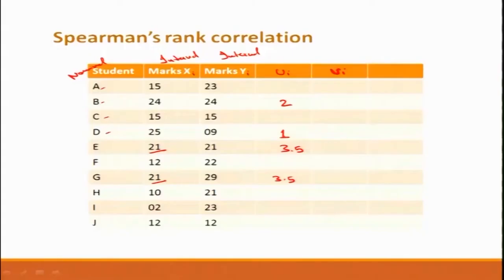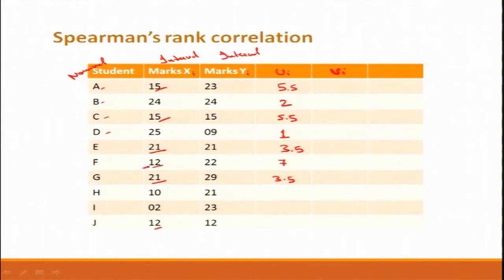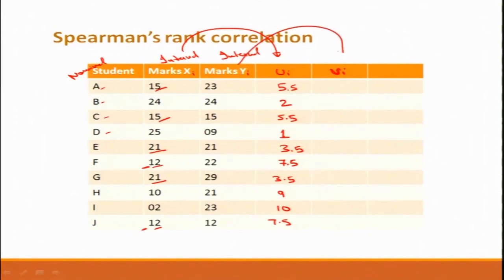If four values of 21 occupy positions 3, 4, 5, 6, the average would be 5.5 and all four get rank 5.5. Continuing through the data: after 21, the next smaller number 15 appears twice, so ranks 5 and 6 go and they each get 5.5. Then 12 appears twice at positions 7 and 8, giving 7.5 and 7.5, leaving ranks 9 and 10 for the final two values. Similarly, ranks v_i are assigned for y_i.